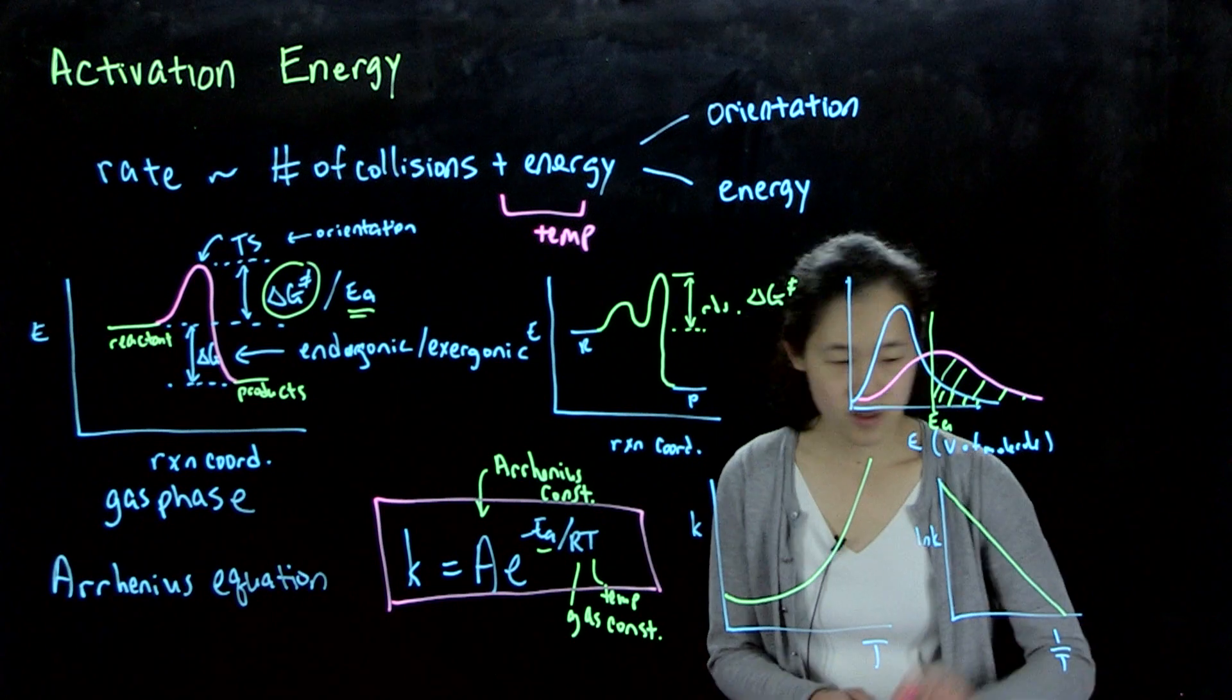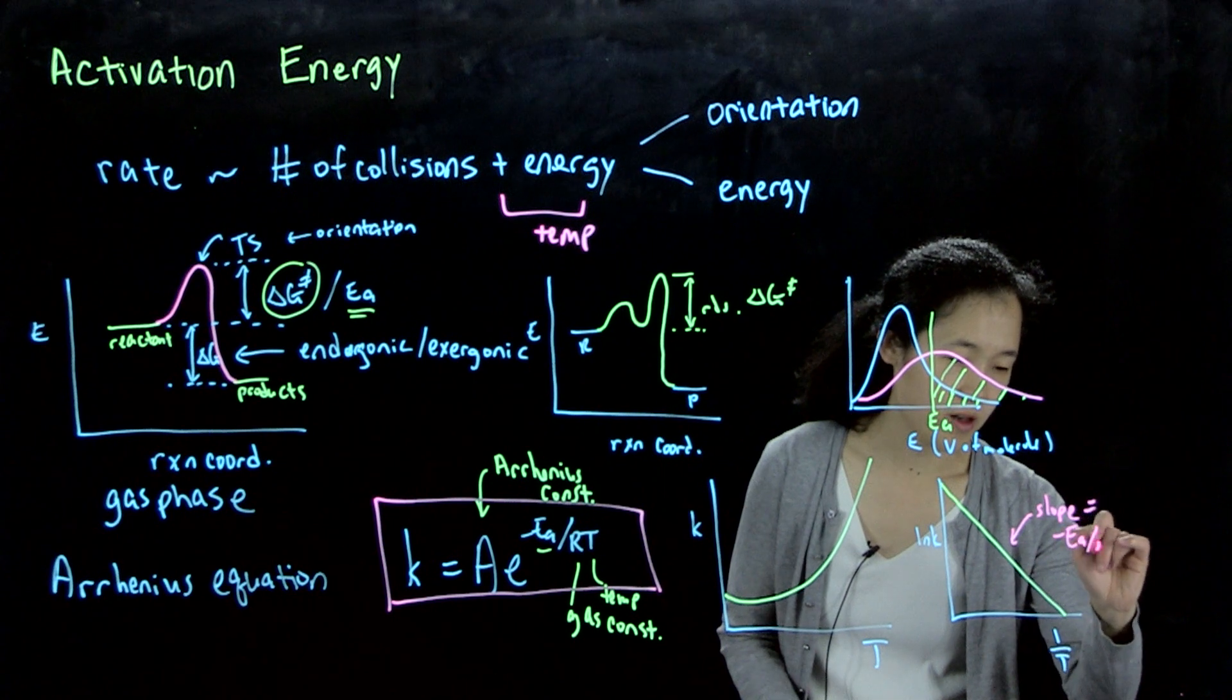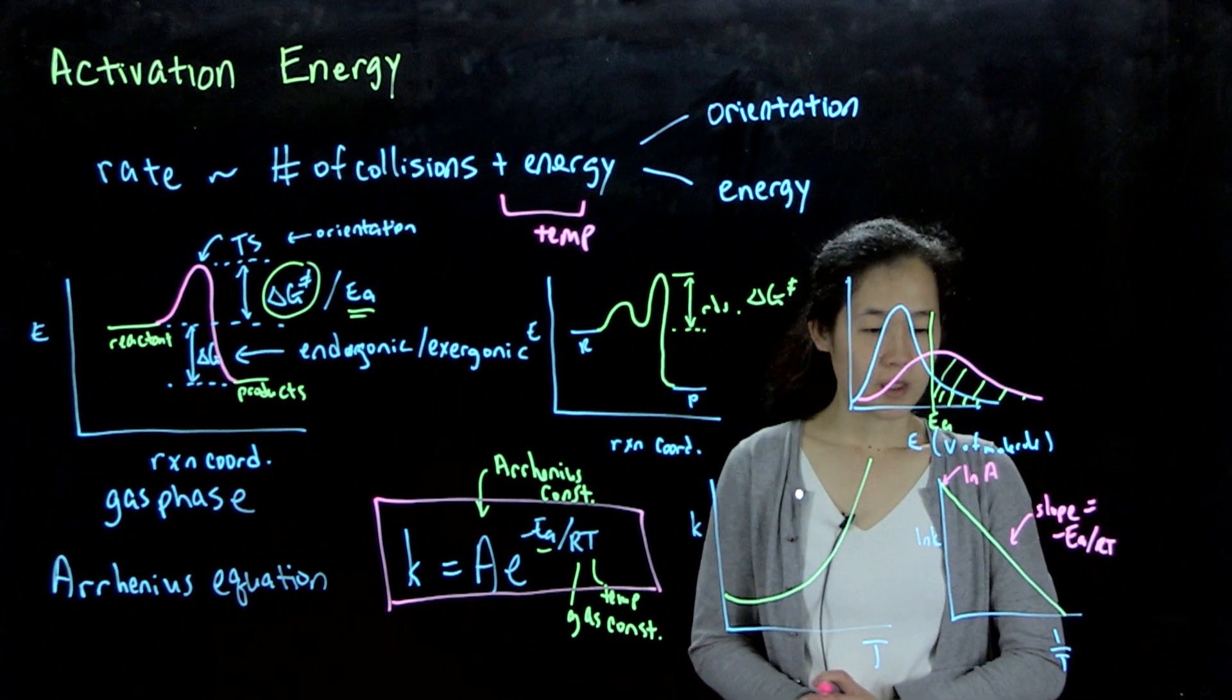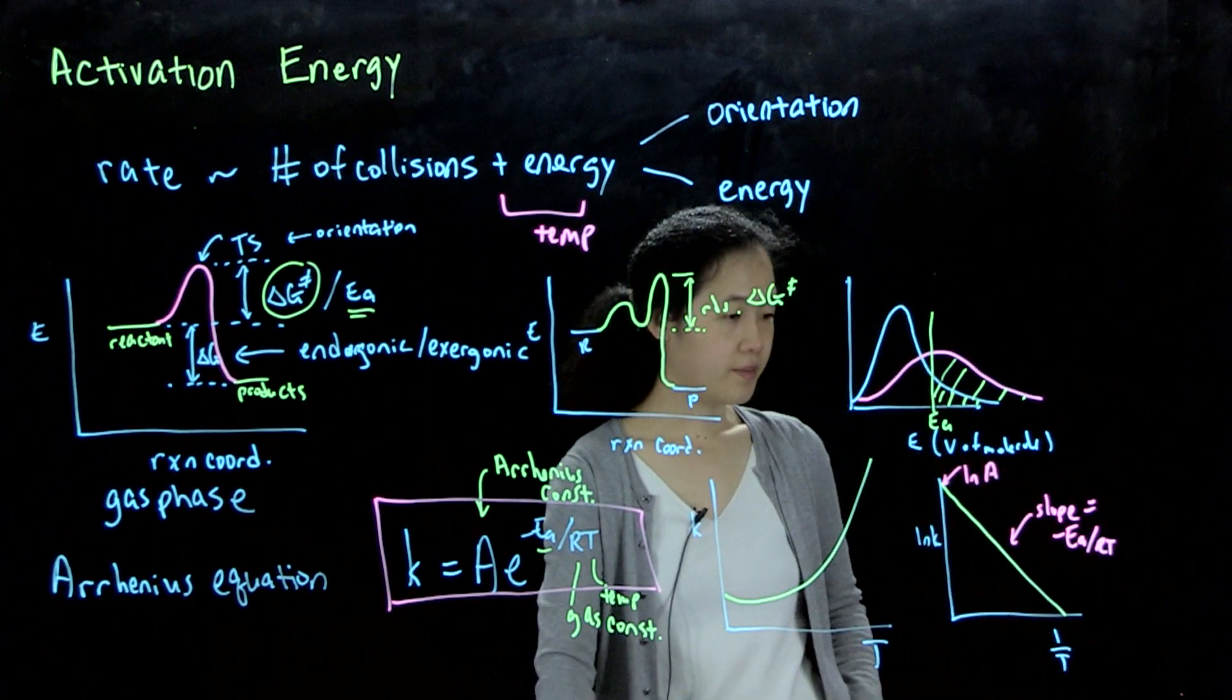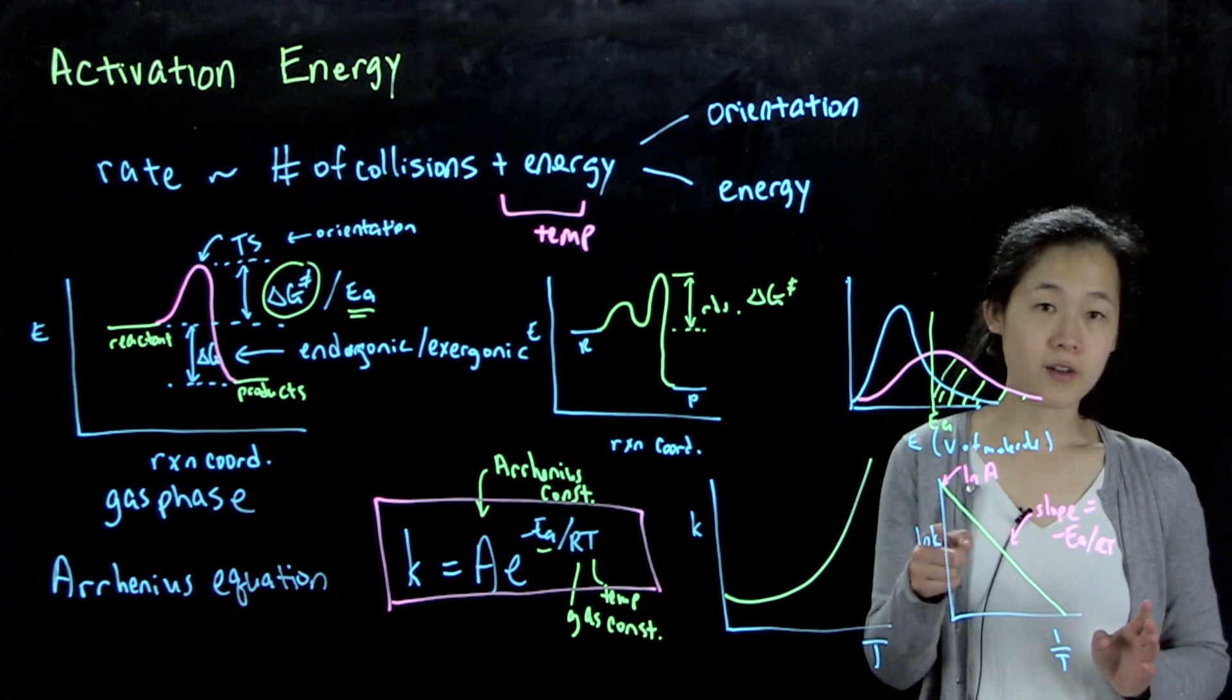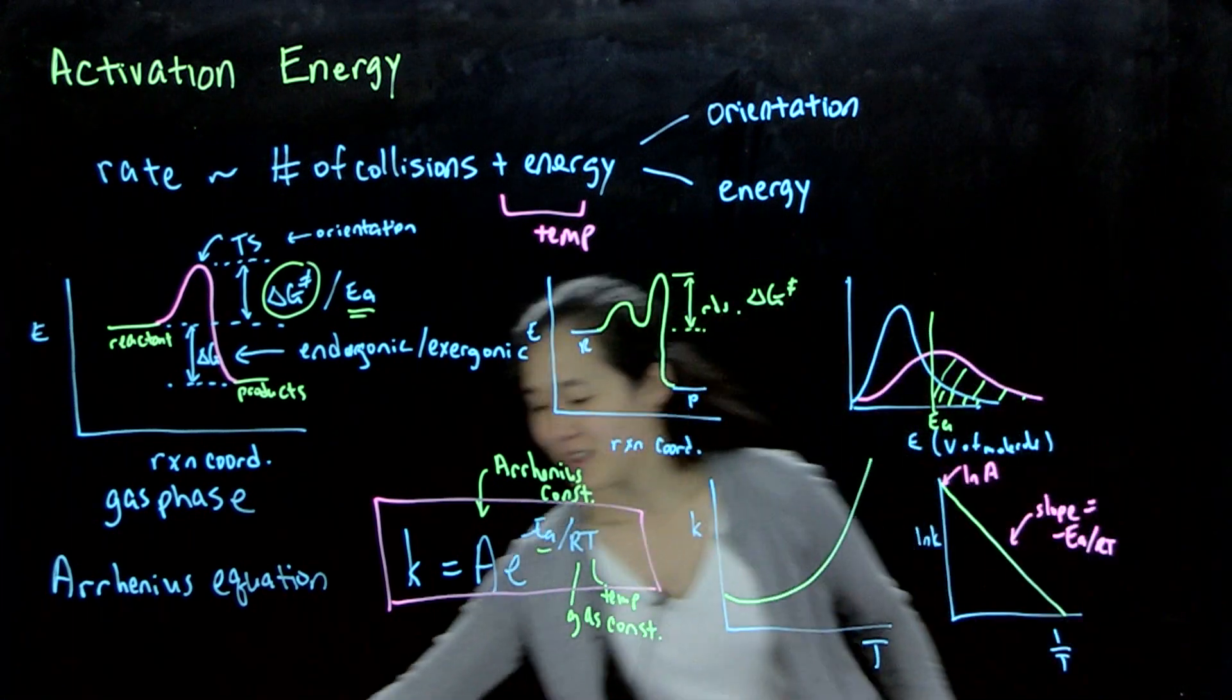And in this case, our slope equals negative EA over RT. And then this intercept is natural log of the Arrhenius constant. So this is one useful way. So what you would do is basically run two kinetics experiments, find our two different Ks at two different temperatures. Or ideally, you'll have more temperatures. So you'll find a series.